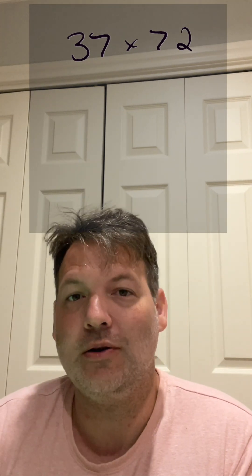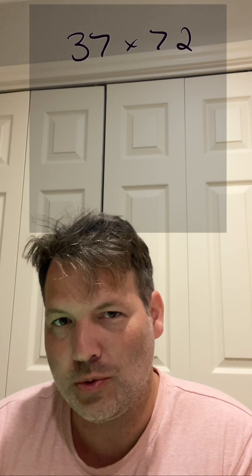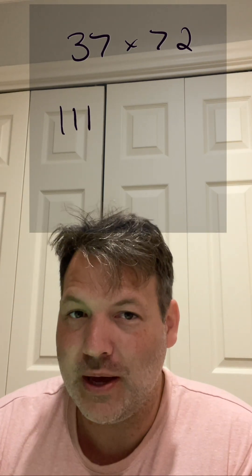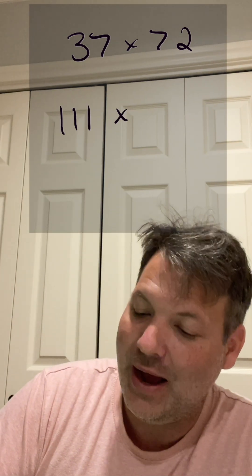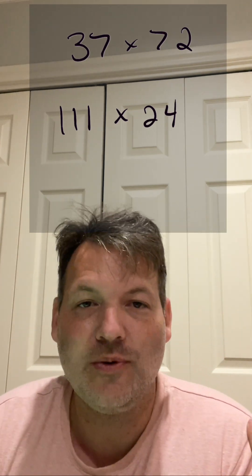But there is a tricky little thing here where 37 times three is 111. And so I can multiply the 37 by three and divide the 72 by three, which gives me back 24.